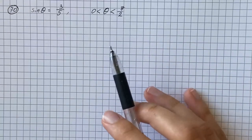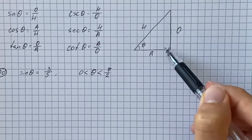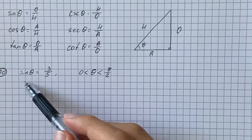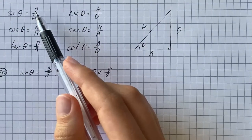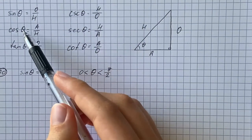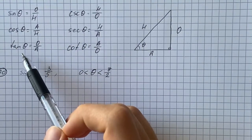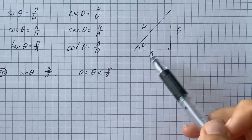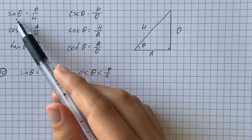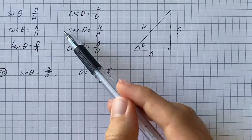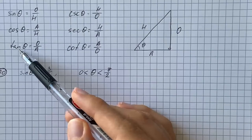One thing you want to remember is the relationship between the angle and sides of the triangle. Sine of theta is the ratio of opposite to hypotenuse, cosine of theta is adjacent to hypotenuse, and tangent of theta is opposite to adjacent. Then cosecant of theta is just one over sine, secant of theta is one over cosine, and cotangent of theta is one over tangent.